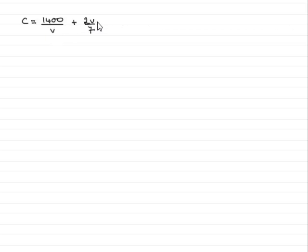And the total cost of the journey C pounds is given by 1400 over V plus 2V divided by 7. In the first part of this question we're asked to find the value of V for which C is a minimum.